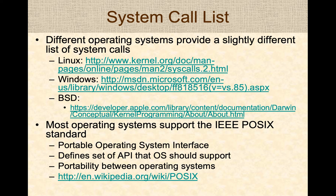By default, most operating systems support a subset of system calls called POSIX. POSIX is an acronym for Portable Operating System Interface — it is an IEEE standard that defines the basics of the API that all operating systems should support. This API provides a level of portability between operating systems for different libraries and types of systems.